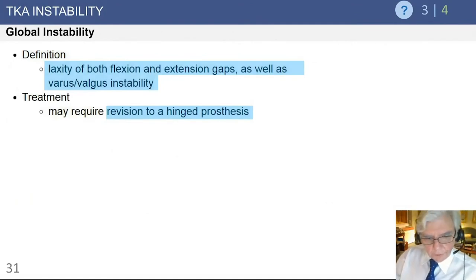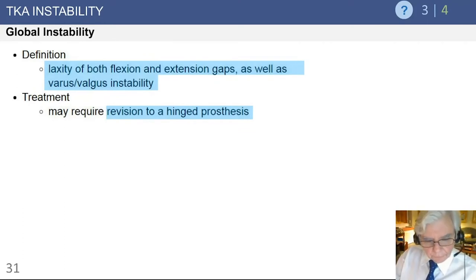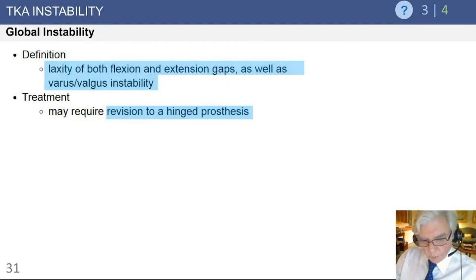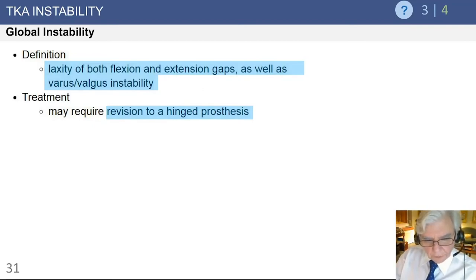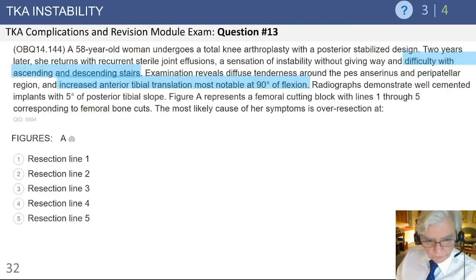Global instability is the worst form of knee instability following total knee arthroplasty. This is where you have laxity both in flexion and extension, a poor soft tissue envelope, and global instability. In these patients, because there is very little medial or lateral ligament support and laxity in the AP direction, you will almost always require a hinge device.